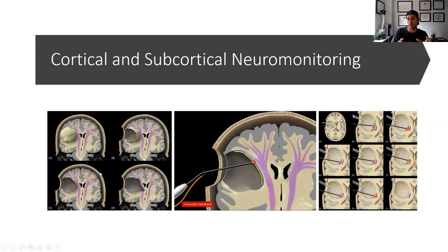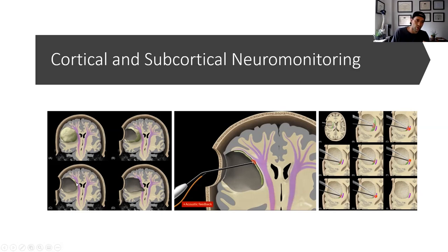The corticospinal tract handles motor function to the contralateral side of the body. In the past, you'd either stop early and leave a big rind of tumor — maybe only removing 60 percent of the volume — to preserve those tracks, but you've left tumor behind. Or you push further, leave a nice little rind, and get a good resection, but there's still tumor there.